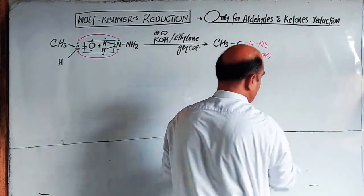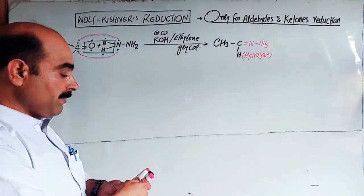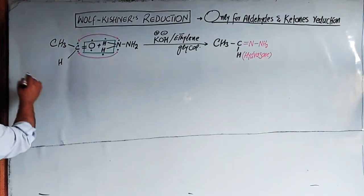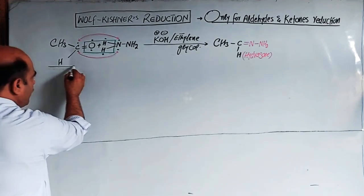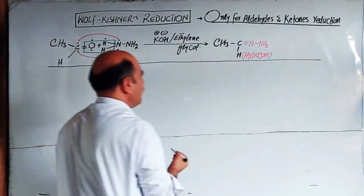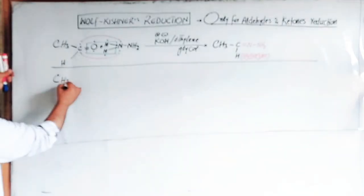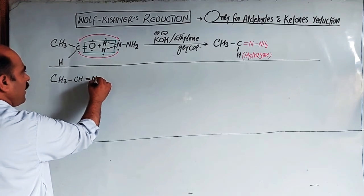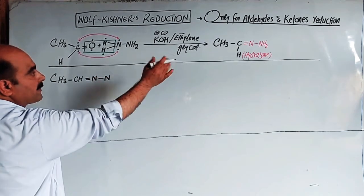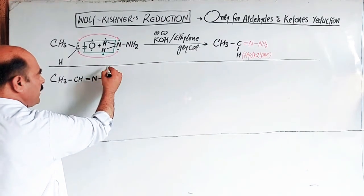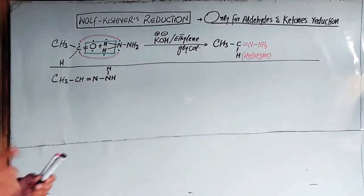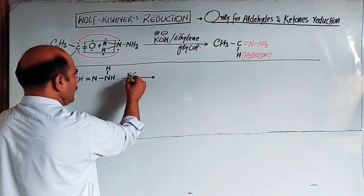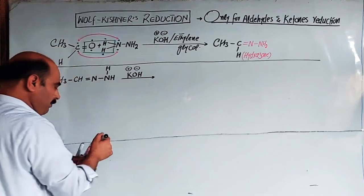Step number one produced the hydrazone intermediate. Step number two now uses potassium hydroxide (KOH). In step two, starting from the hydrazone, the carbon-nitrogen double bond changes to a single bond, and a double bond forms in a new position. KOH in ethylene glycol is the condition used at this stage.